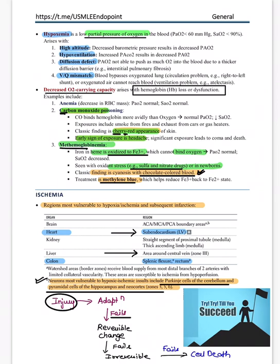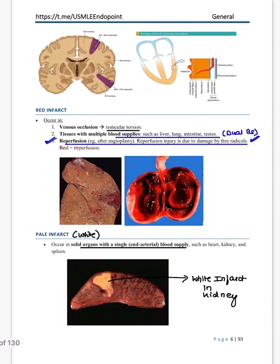When there is injury, cells try to adapt; if they fail they undergo reversible changes, and if they further fail they go to irreversible changes like necrosis and apoptosis — ultimately leading to cell death. Moving to infarction: there are red infarcts and white (pale) infarcts. Red infarct means abundance of blood — seen with dual blood supply as in liver, lung, intestine, and testes, and in reperfusion injury due to oxygen free radicals.